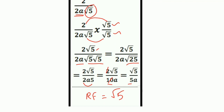So remember, children: if the denominator has only one term, it is very simple — take the RF as the same surd number. If there is a coefficient, just ignore it. Consider only that surd as the RF, multiply to numerator and denominator, and proceed further.